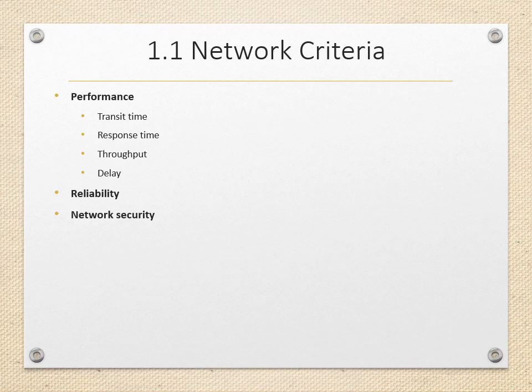Transit time is the amount of time for a message to travel from one device to another device. Response time is the time elapsed between an inquiry and a response. Throughput is the amount of data sent to the network. Delay is the amount of time taken by a message to go from one device to another, and it is due to traffic congestion in the network.